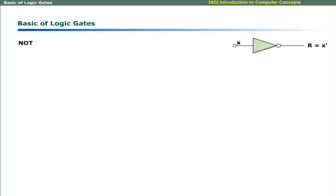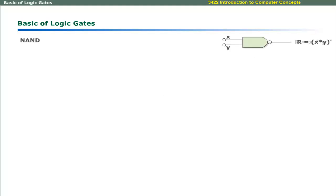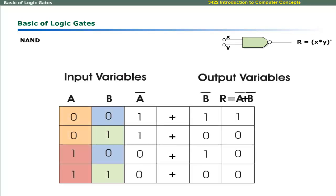The NOT gate inverts the value of the input variable. The physical representation of the NOT gate shows that if the input is 0, the output is 1, and if the input is 1, the output is 0. The complemented AND gate is represented by the equation A-bar plus B-bar. The truth table shows that its result is 0 or false only when both input variables have binary values 1 or true.